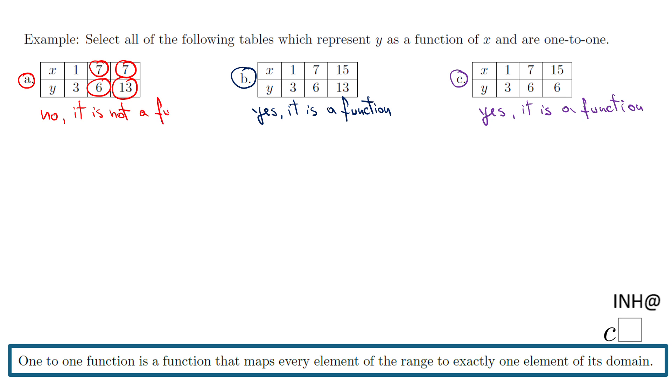Now we can move to the second part where we want to see which of these functions is what we call a one-to-one function. Obviously, we can move away from A because it's not even a function. We have these two last choices, B and C. Which of these, or maybe both, are one-to-one functions?